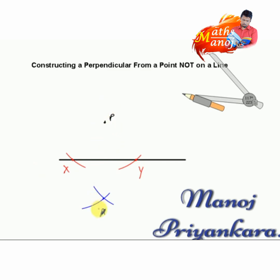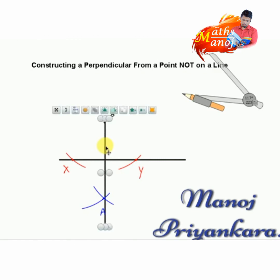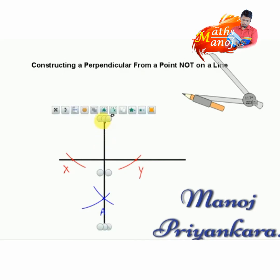Then using a ruler — in geometry we call it a straight edge — we join the points P and A. Now our construction is over. Remember, the construction lines must be clear.